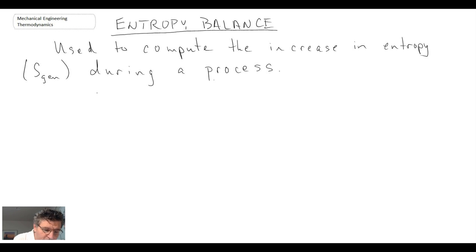So the equation that we're working with is entropy in minus entropy out plus entropy generation is equal to the change in entropy within the system, and the units of this equation are in kilojoules per kelvin.